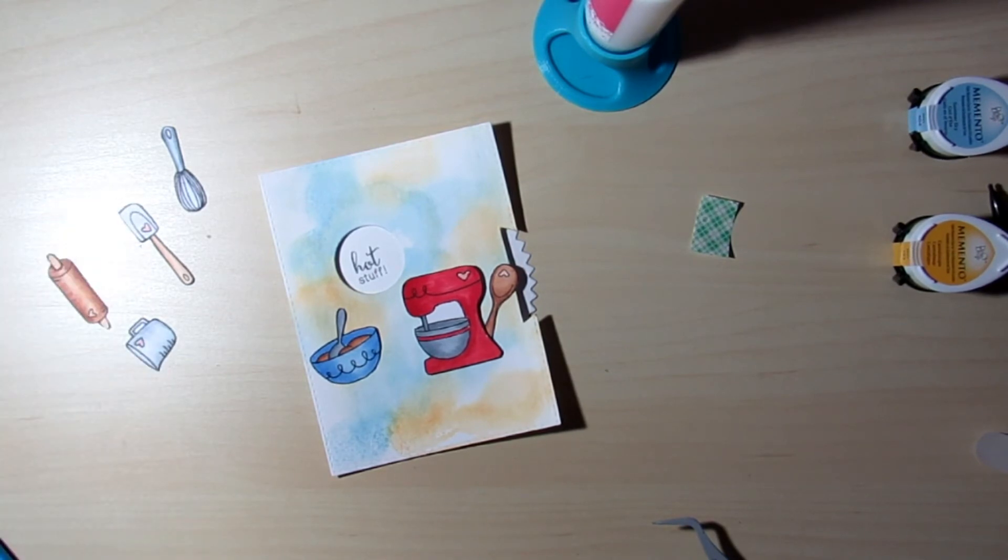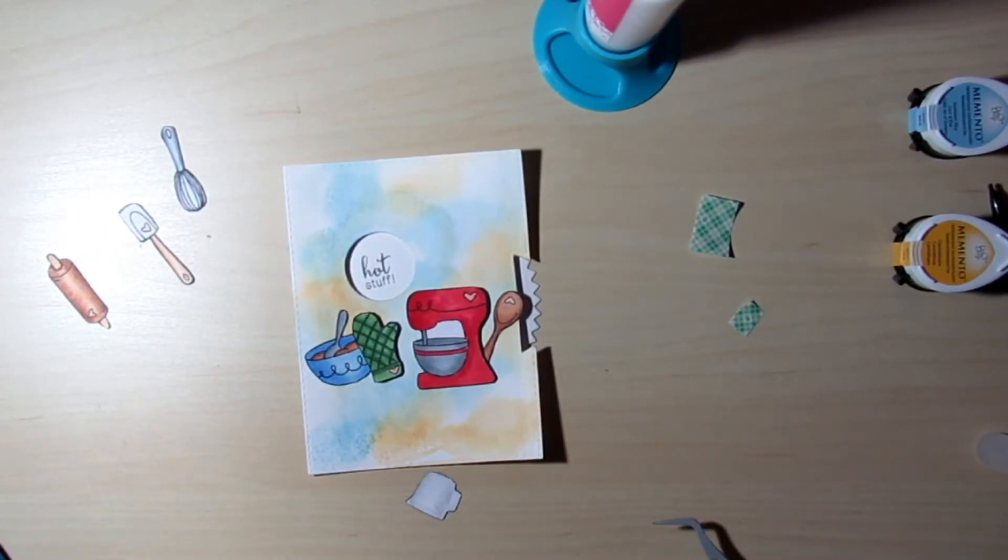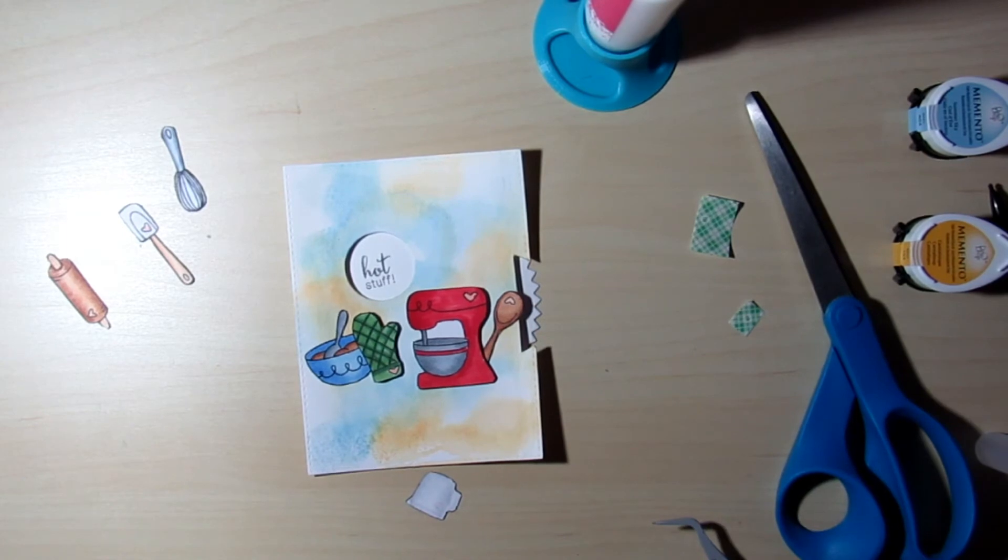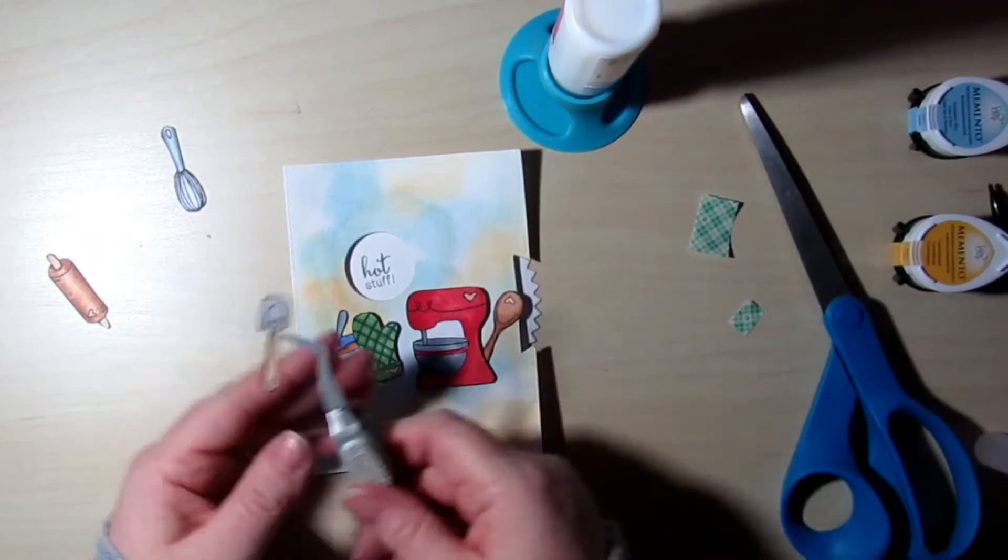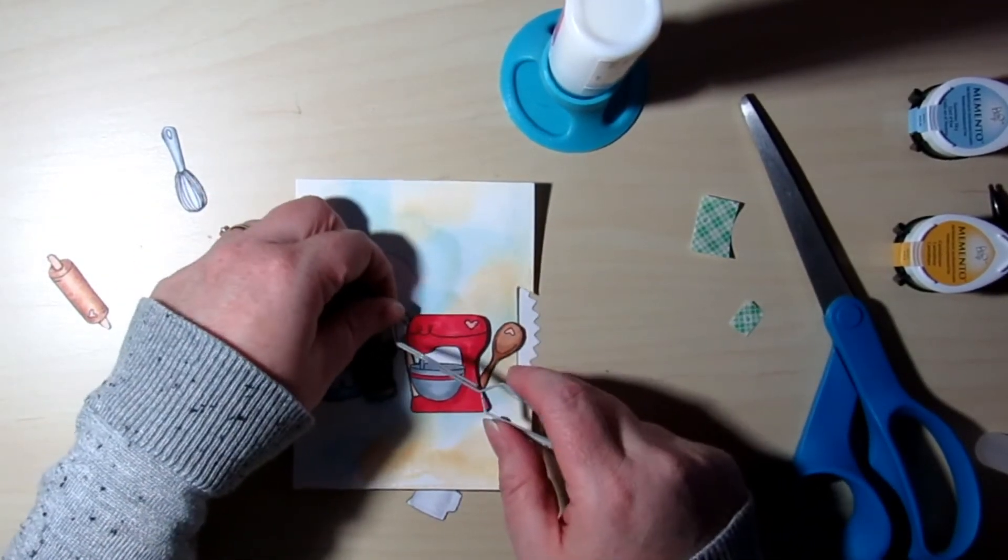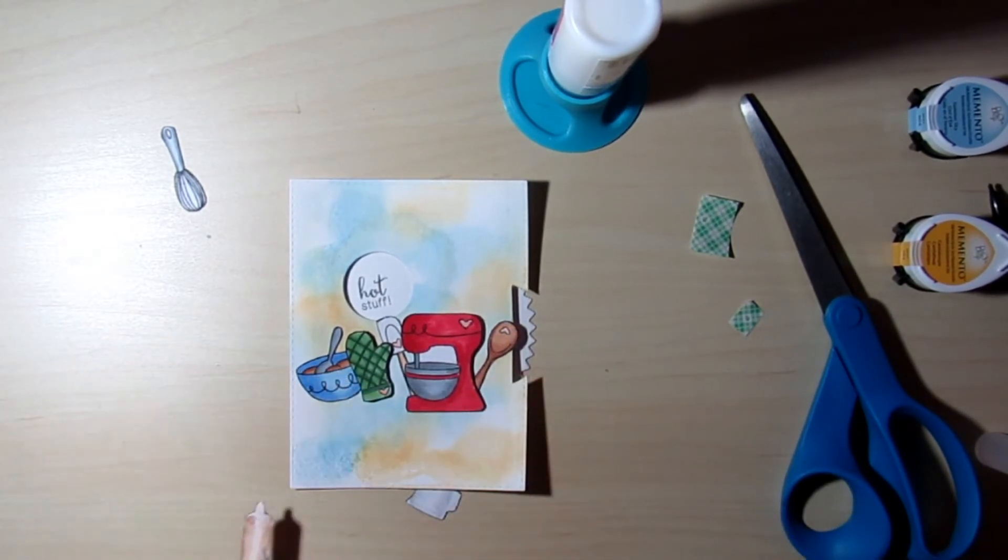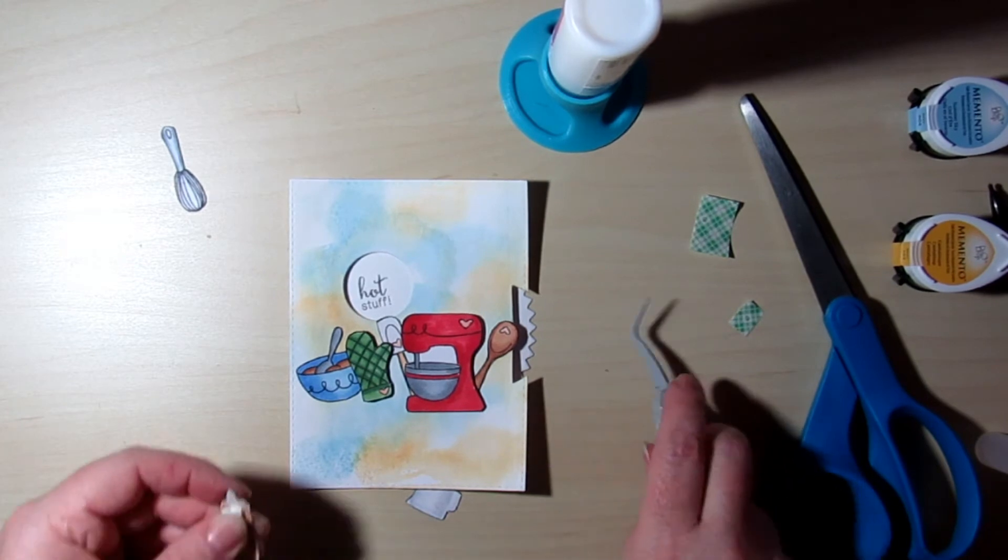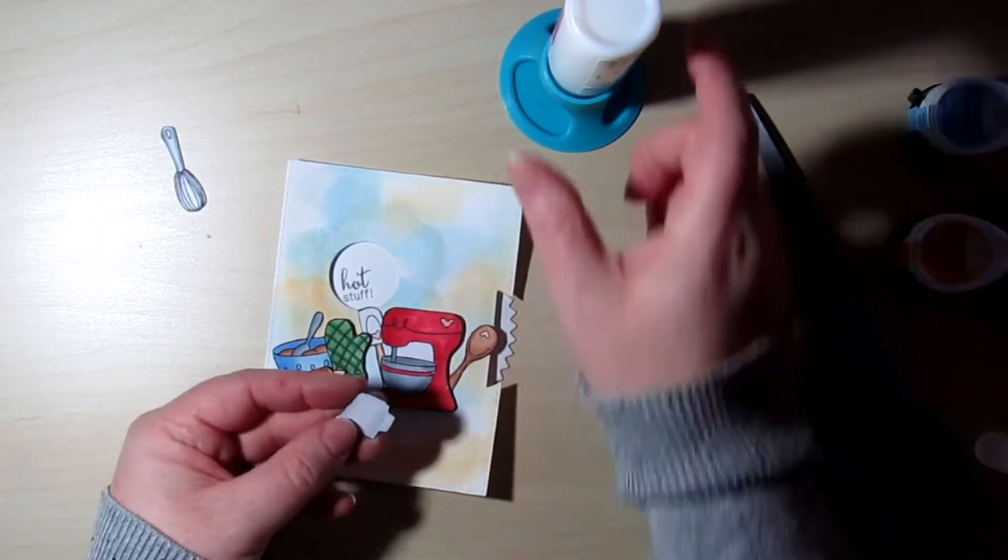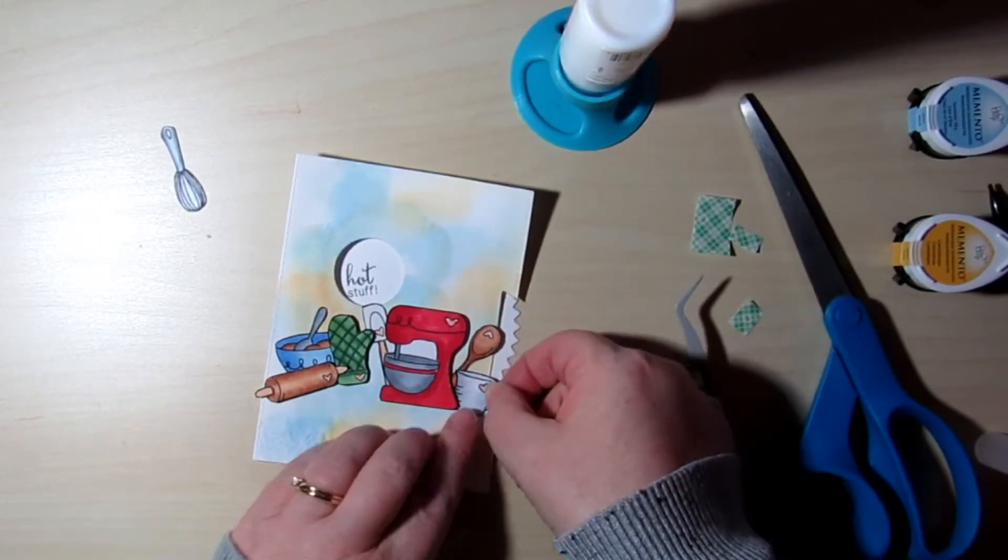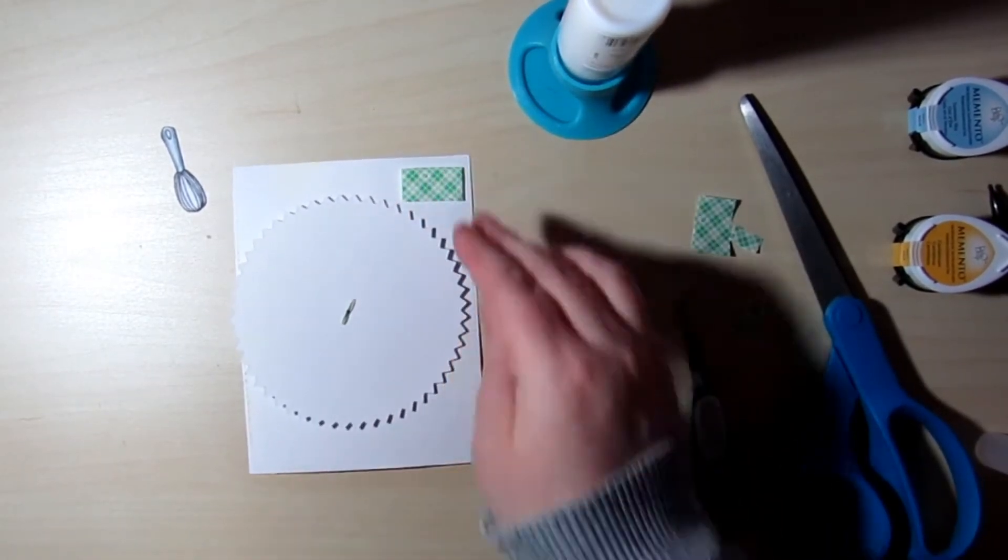So next we're going to add the oven mitt with some foam tape and the measuring cup, again adding a little bit of foam tape. But I said I'm going to put the spatula in first. I tuck that right behind. The rolling pin will go up on a little piece of foam tape. I thought it popped up nicely with the oven mitt. Oh, and I guess I decide at the end that it's going to tuck behind the mixer, so that just goes down with some glue.